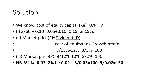Solution. We know cost of equity capital, KE, equals D divided by P, plus G. So: $3 divided by $60, plus growth of 10% (0.10), equals 0.05 plus 0.10, equals 0.15, which is 15%.